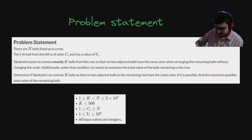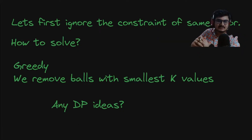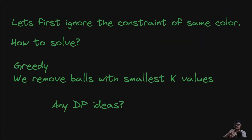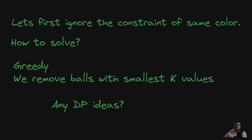Any DP ideas to solve this problem? Let's first ignore the constraint of same color. The greedy idea would be: take all v_i values, sort them, remove the first smallest K values, and take the sum of the remaining. But this idea won't help us once we add the color constraint.